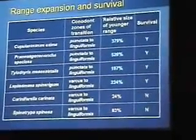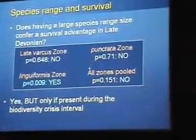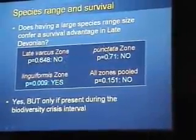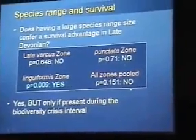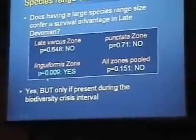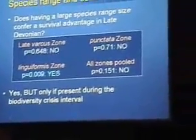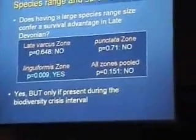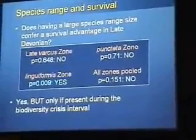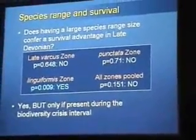So let's do some stats. It turns out that it really doesn't matter if you've got a large range any time before the crisis interval, or if you have a large range overall. It's only during the crisis interval that having a large range helps you at all. It's basically this difference between background events and what's going on during crises or mass extinctions.